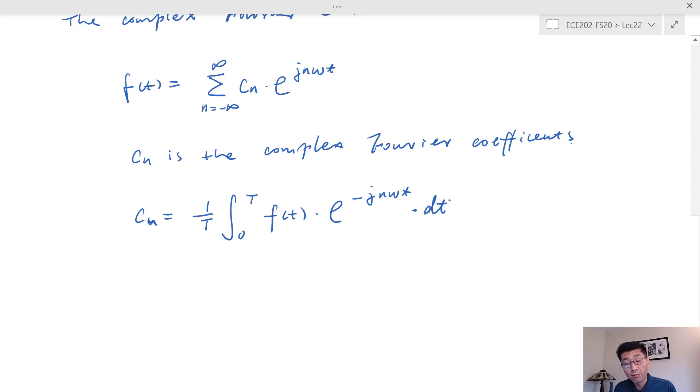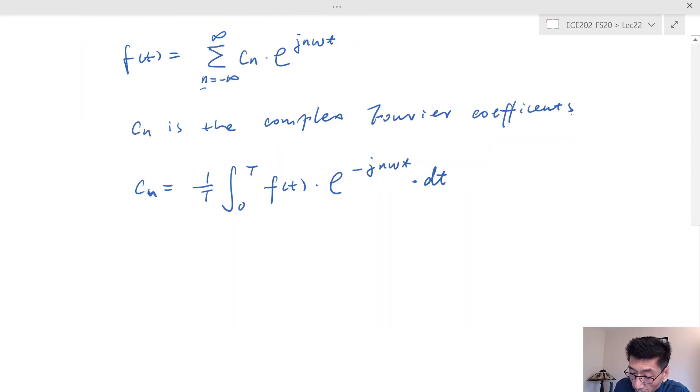This proof is very straightforward. If we do a quick proof on this, and if we do the 0 to T, f(x) times e^(-j*n*omega*t) dt.